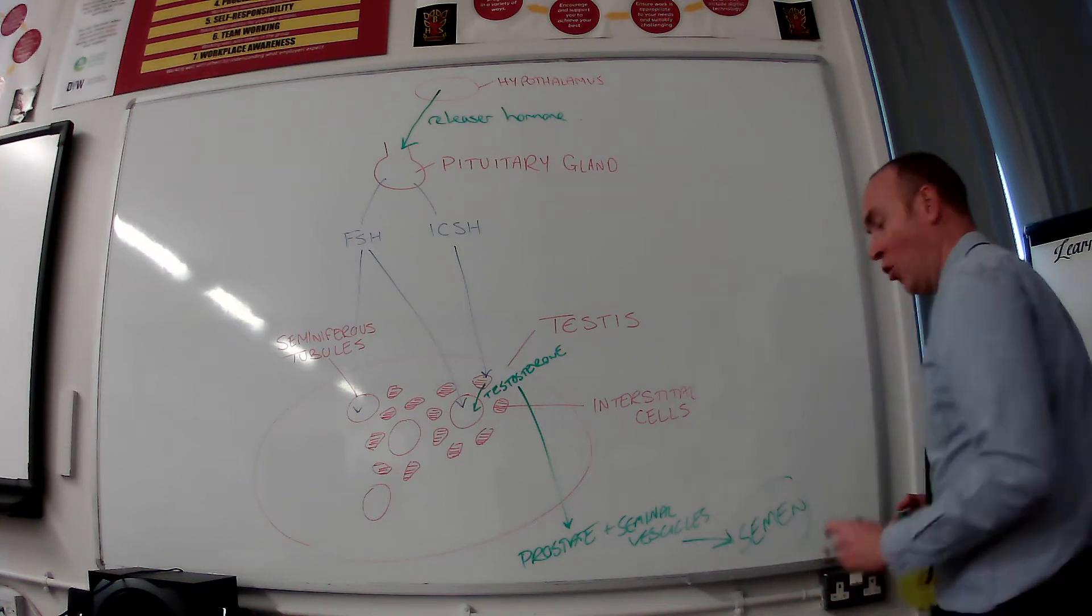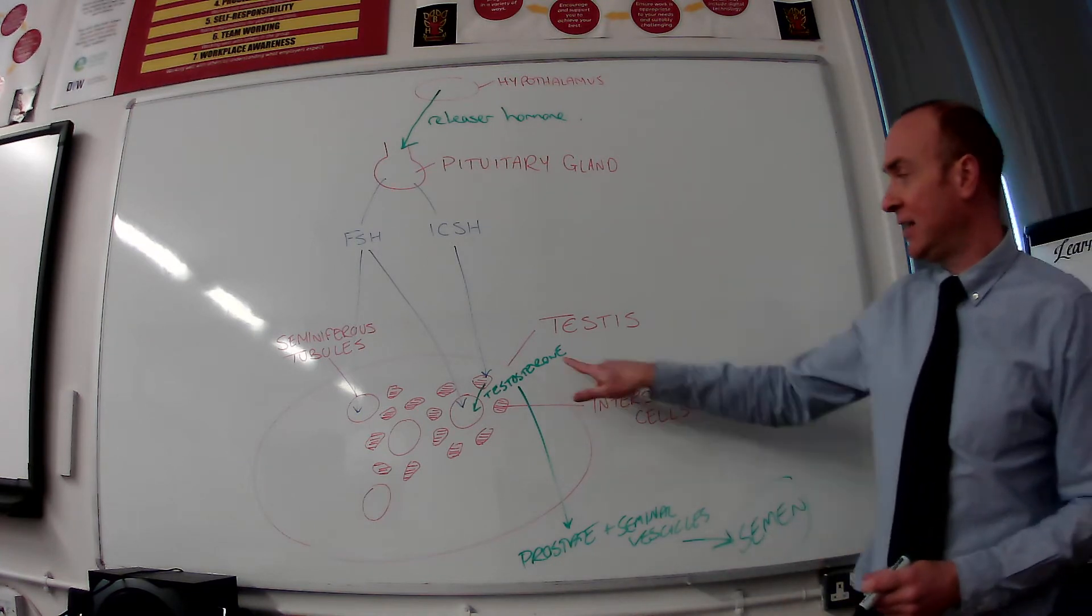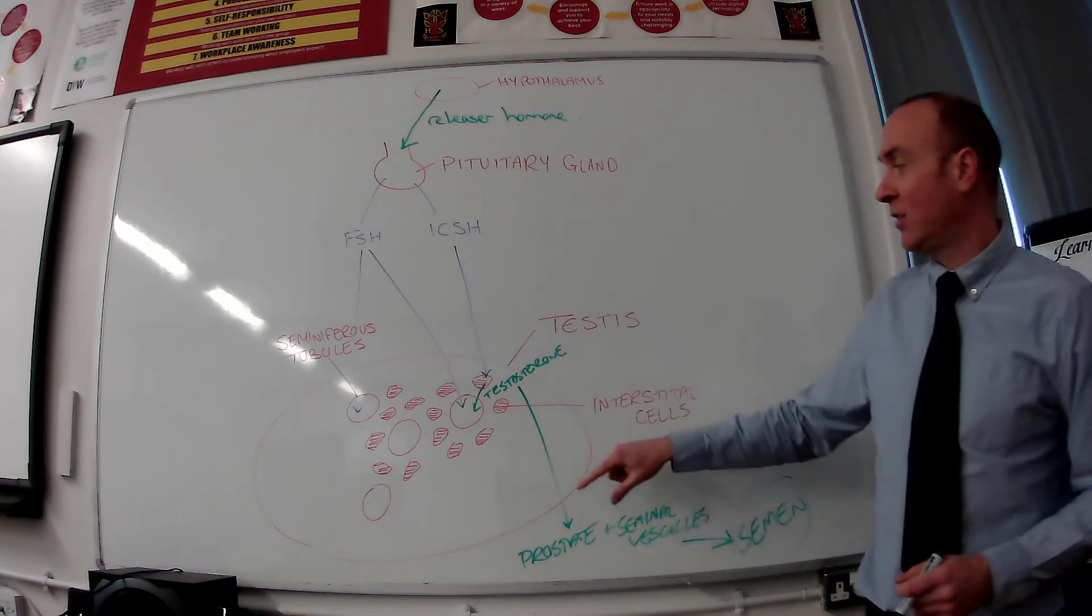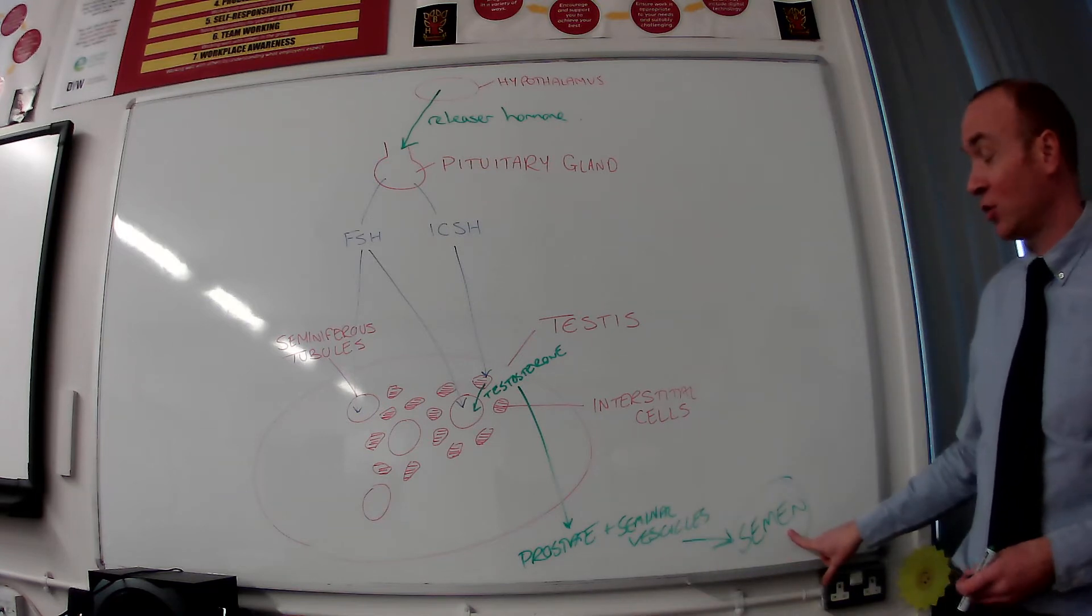Both of which produce semen. Now semen is not the same as sperm. Sperm are the sex cells. Semen is the stuff the sex cells get to swim around in. So that's the second thing testosterone does is acts on the prostate and seminal vesicles to trigger the release or production of semen.